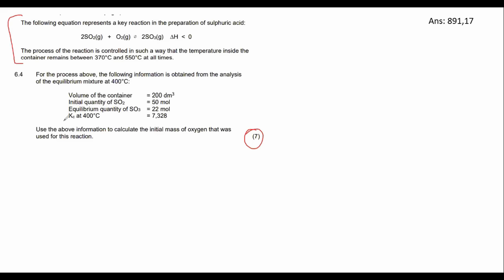So question 6.4, as soon as we see Kc and then we see a mark allocation of seven, we should know that this is going to be a Kc question. And so what I do immediately is I go set up my Kc table.